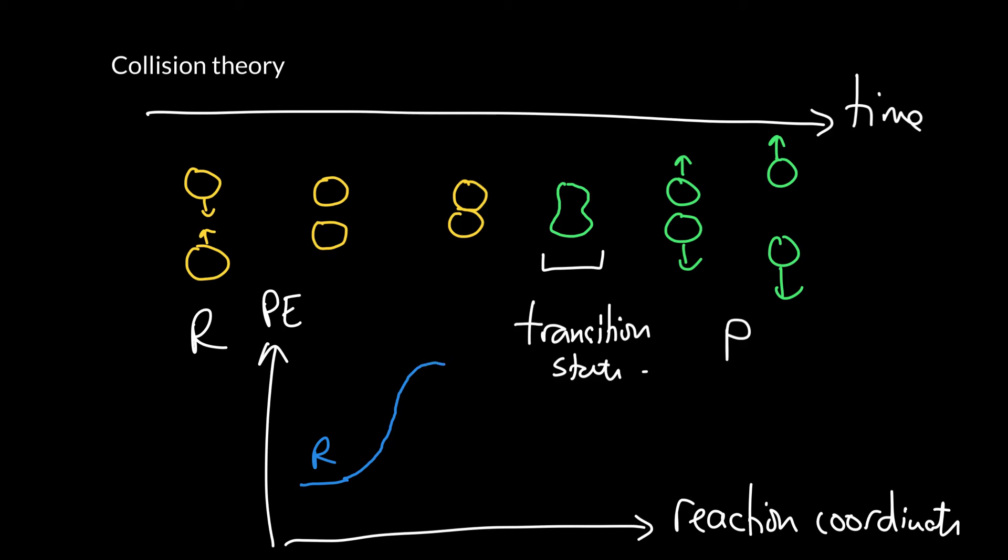What we find is that as we hit the transition state, as the atoms start to swap from one reactant to the other, then the energy goes back down again. At the end of the day we have products.